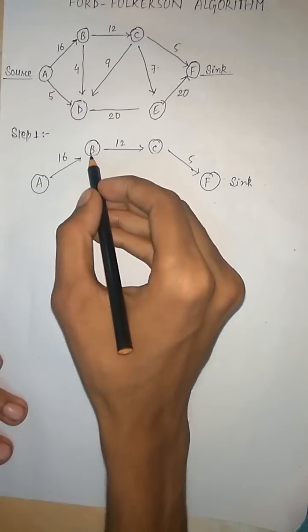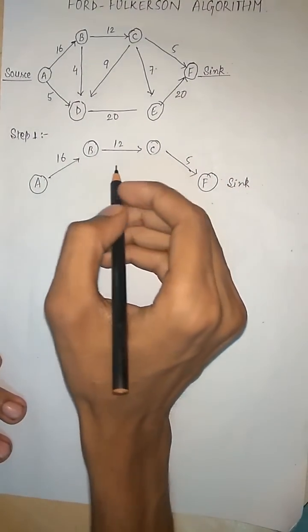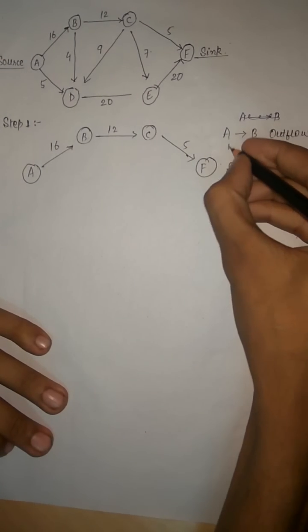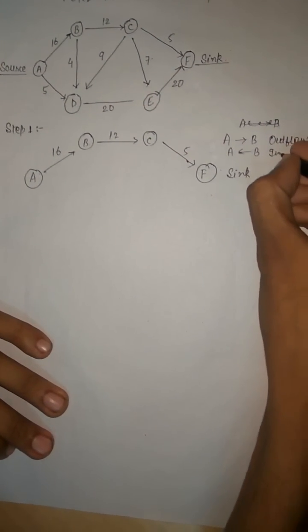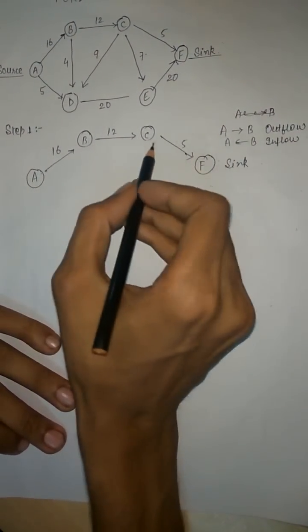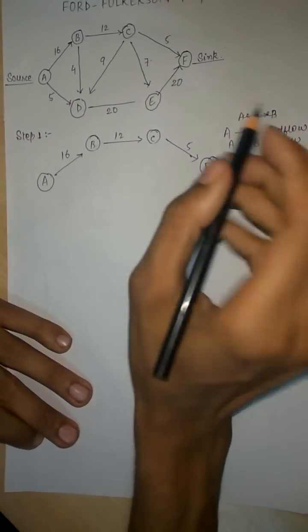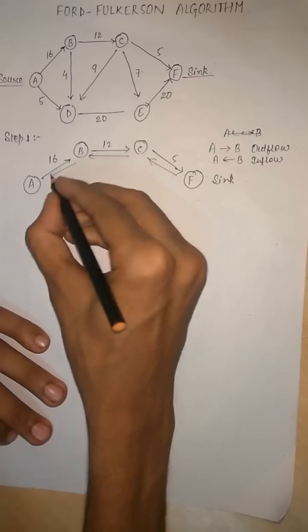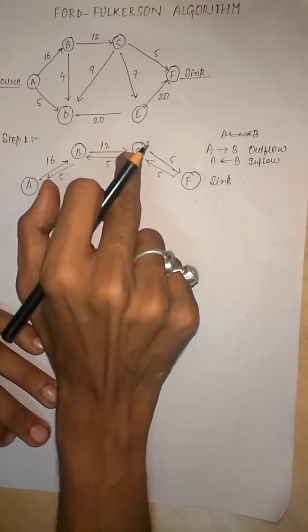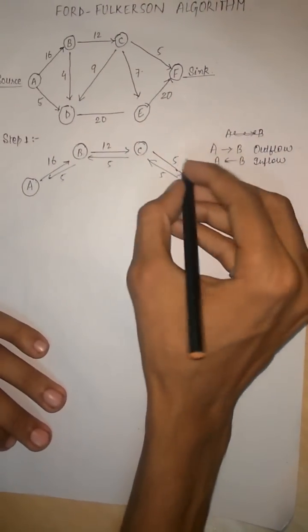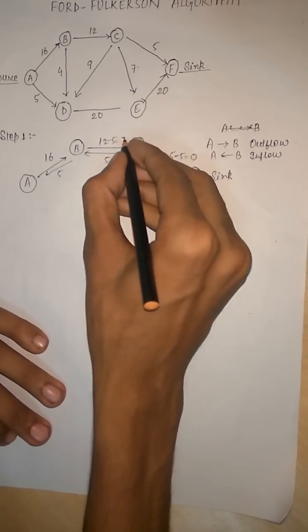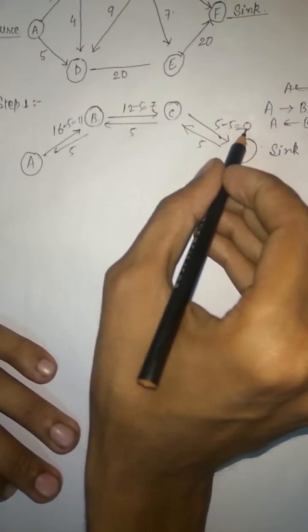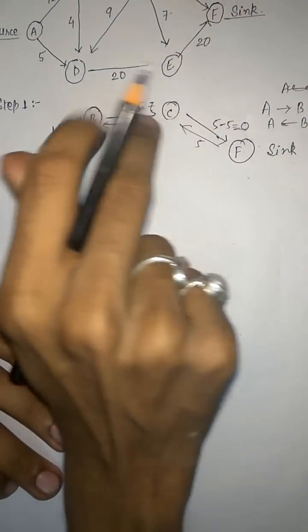We consider the flow from A to B as outflow, and the flow coming back to A would be considered as inflow. So A to B is our outflow and B to A will be known as inflow. We find the minimum value of outflow — here, from C to F is the minimum, which is 5. So we draw inflow to all the edges with the value 5. Now since 5 is inflow to C, the value will be subtracted from the outflow. This becomes 5 minus 5, which is 0. This would be 7 and this would be 11. Now the value of outflow from C to F is 0, so this path will not be traversed again — we cannot go from C to F.